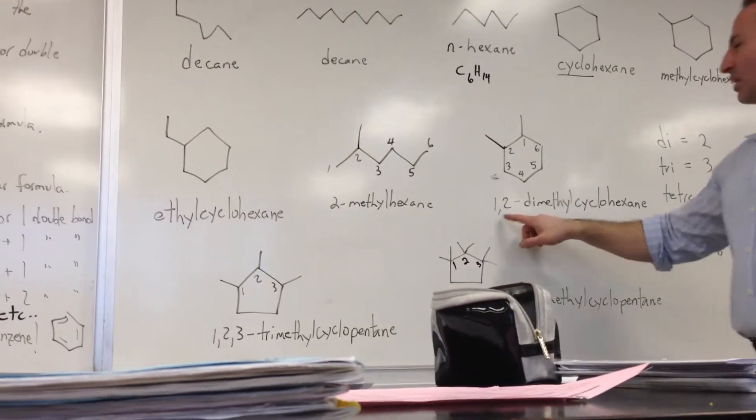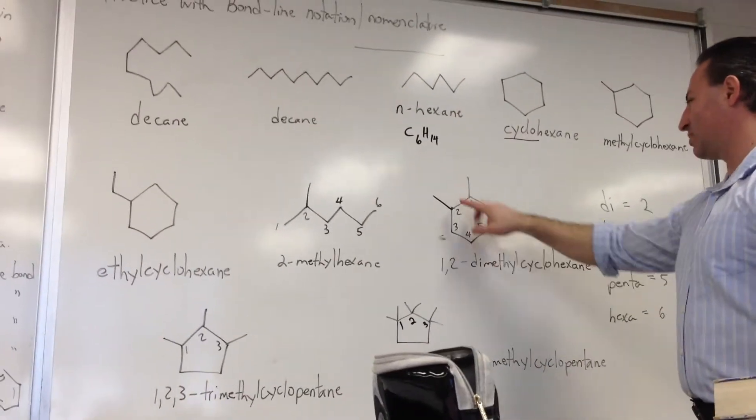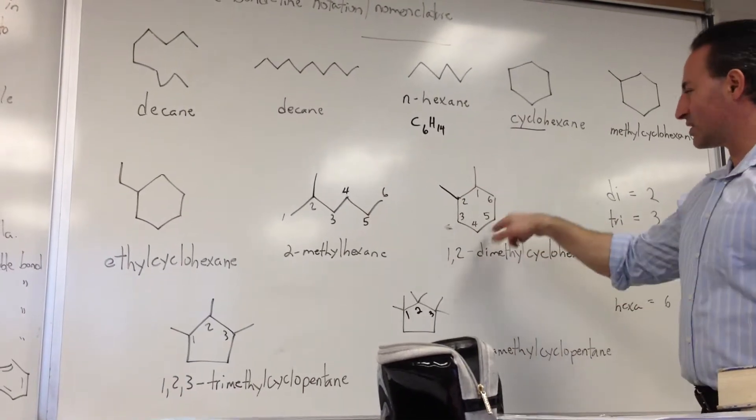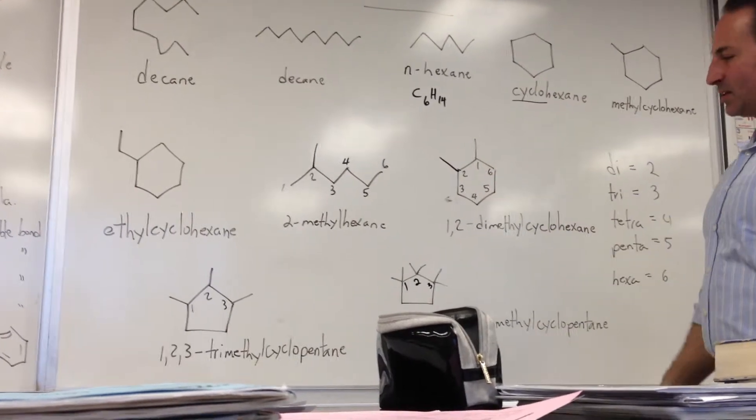So this is called 1,2-dimethyl, these are the methyl groups, dimethyl because there's 2 of them, cyclo because the molecule is cyclic, and hexane because there are 6 carbon atoms in it.